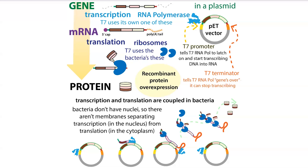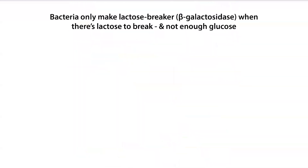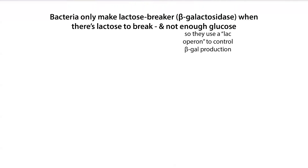The reason why this works is because bacteria are only going to make this lactose breaker, beta-galactosidase, when there's lactose to break and not enough glucose. So we're able to induce expression only when there's lactose around, or something that looks like lactose — and this allows for inducible expression, meaning making of the protein on demand. How it works is by taking advantage of the lac operon, and the enzyme, the lactose breaker, is called beta-galactosidase or beta-gal.